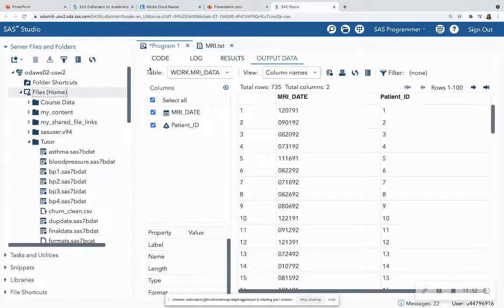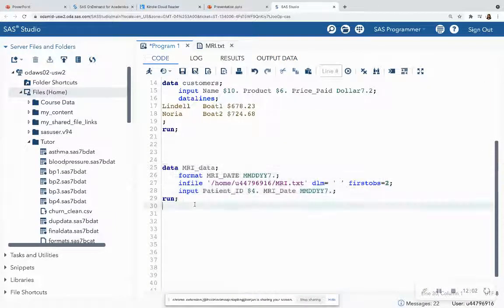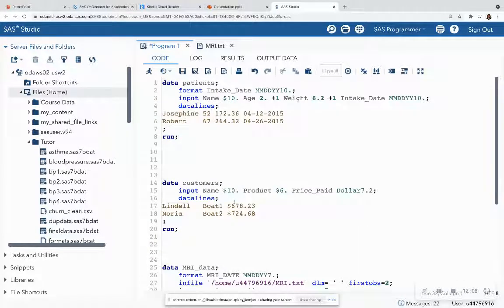So when I run this code, I see that the MRI date, the first one is December 7, 1991, and I also get the patient ID. So that is how you would utilize informats if you are actually reading in a text file and not typing in the data on your own directly into the SAS program.